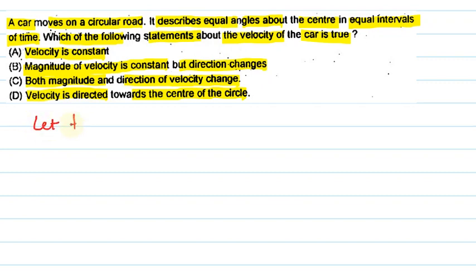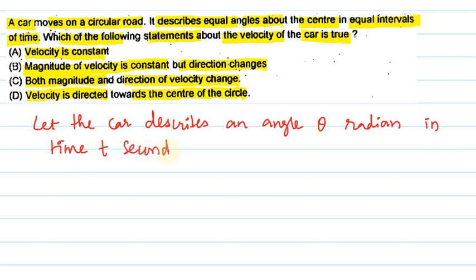Let the car describe an angle theta radian in time t seconds. Therefore, angular velocity omega is equal to angular displacement theta upon time t, that is radian per second.